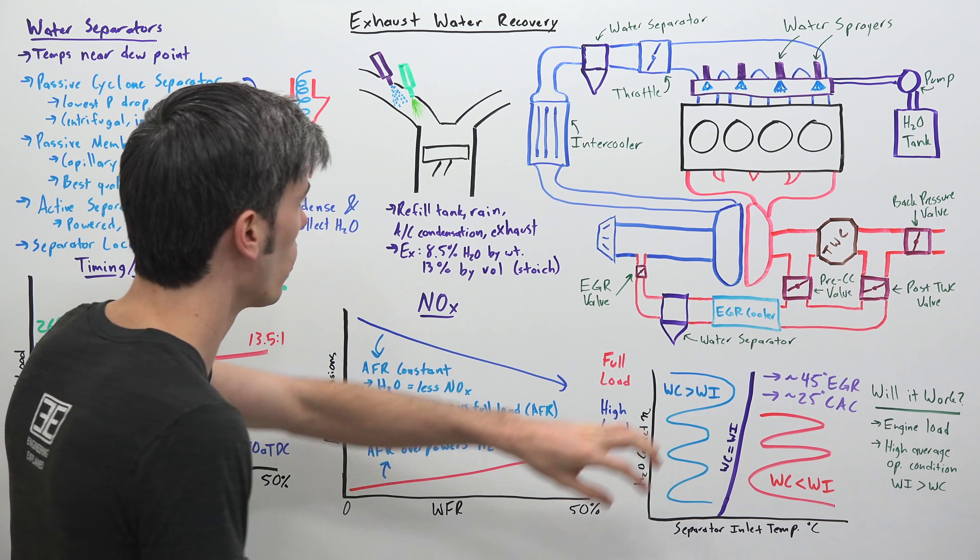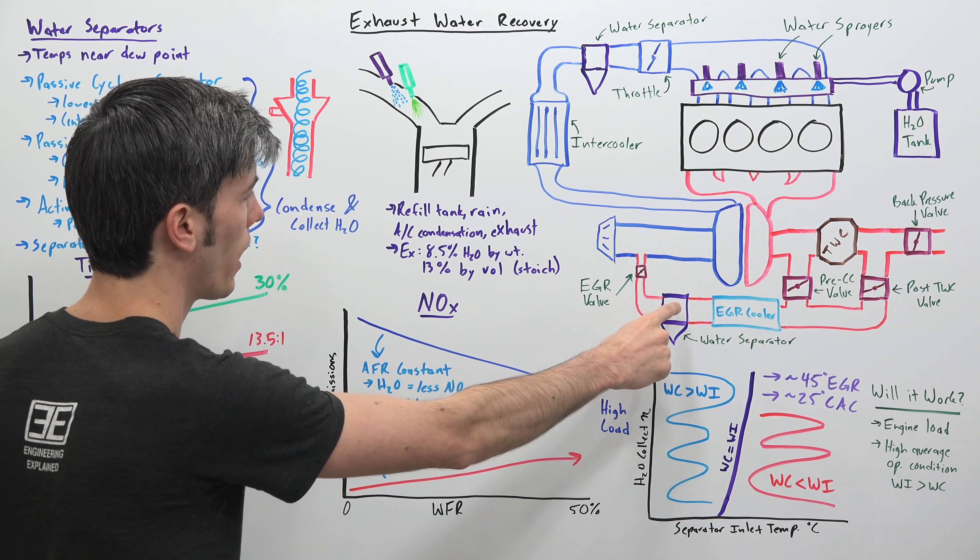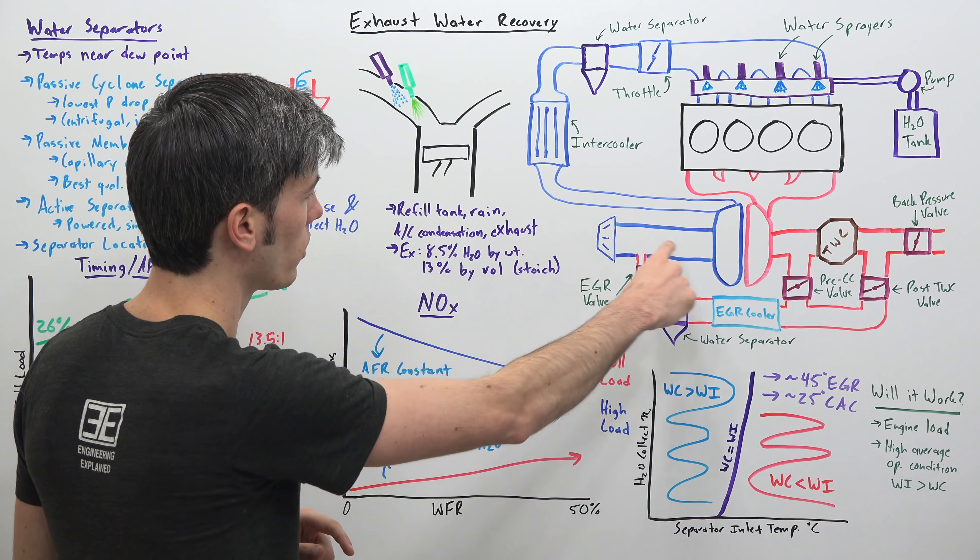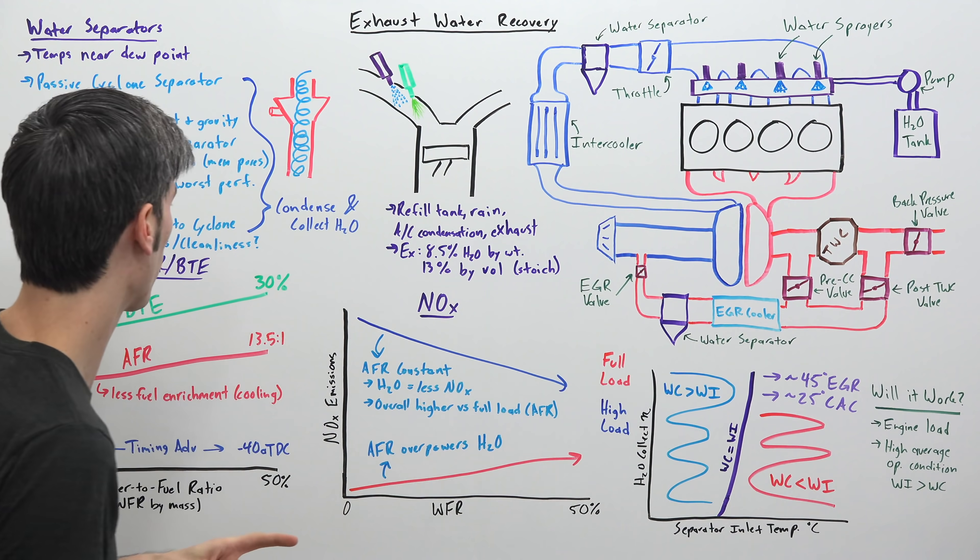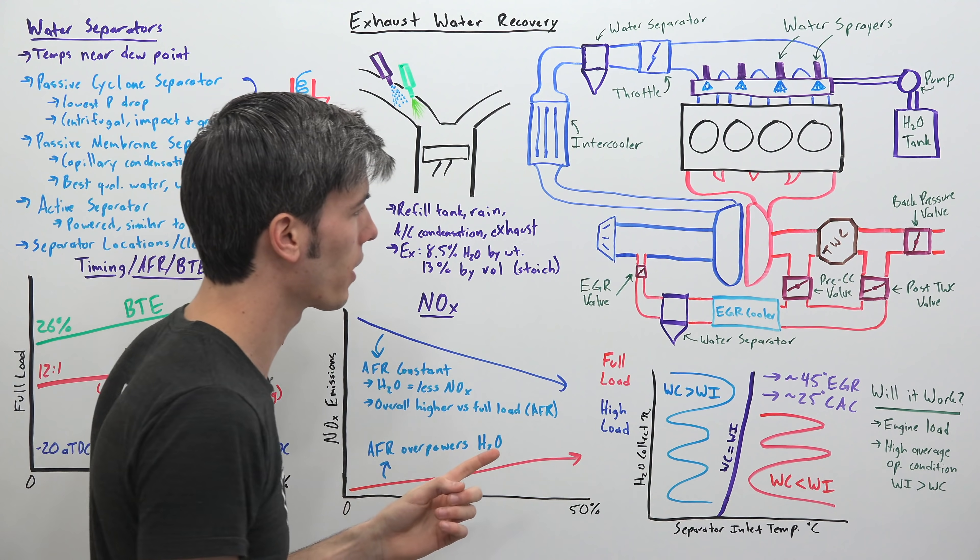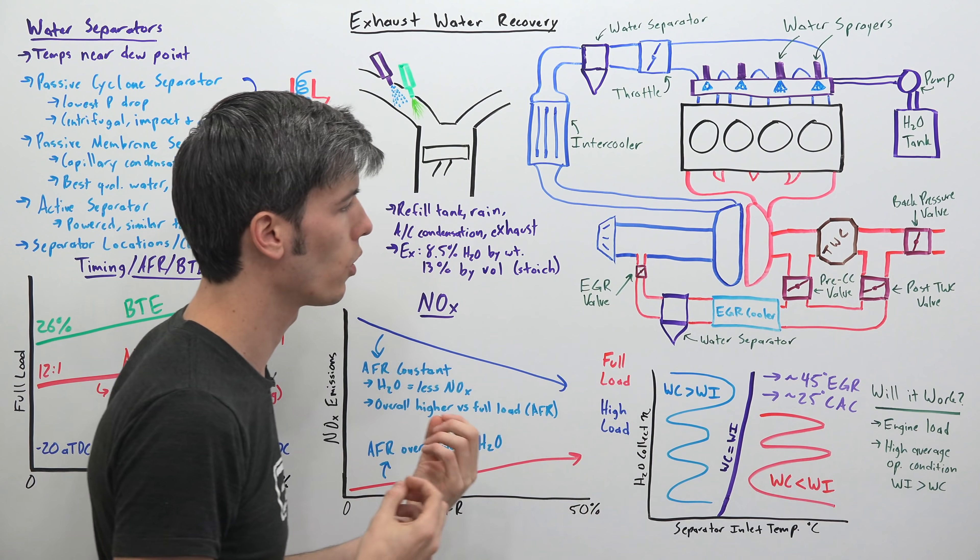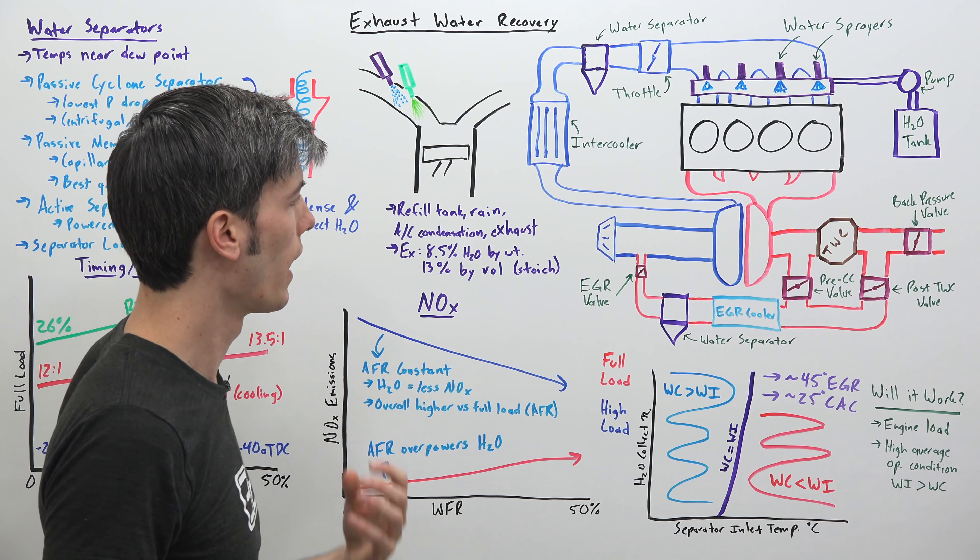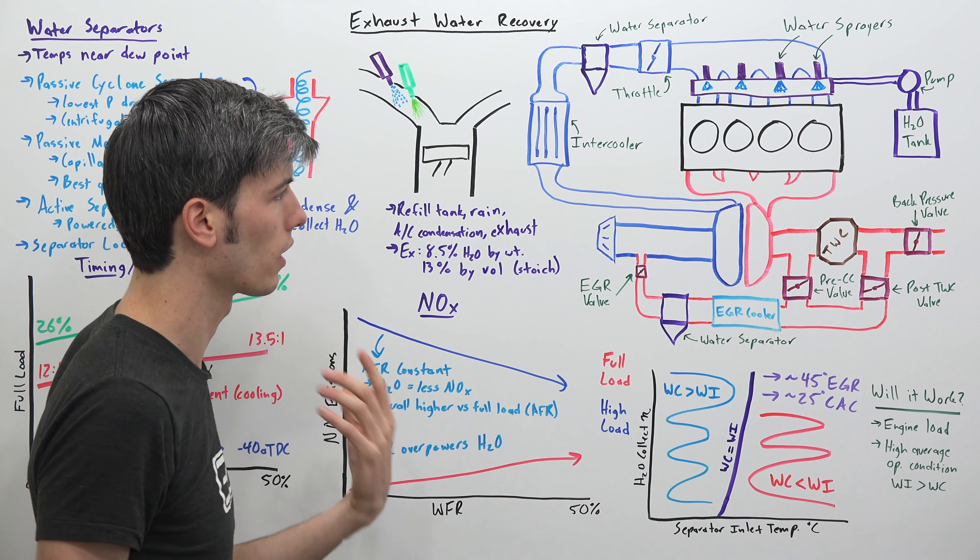And so you may be wondering, what's going on with these locations? Why do we have one here after the EGR cooler? Why do we have one in the intake system meaning just plain old air that's going through is going to be passing through it? And so it's interesting because remember you have to have these at a low temperature. The air entering these water separators needs to be at a temperature low enough at which it can actually condense the water and collect it.